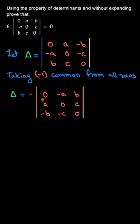Now what has changed over here? You can say the column over here has been written as row over here, column two as row two, column three as row three.